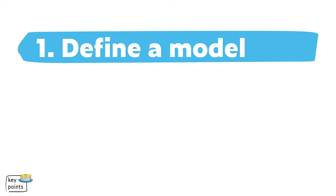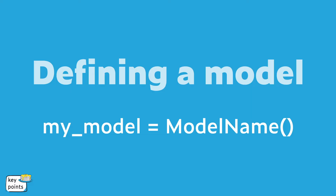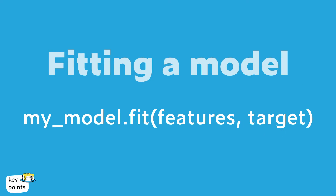When we define a model, what you want to do is think to yourself: what model would I like to use? As you develop your machine learning skills, you'll have a wide array of models to choose from and you'll start to develop a sense as to which models will be best suited for any given task. If we want to think about this in more general terms, we could abstractly represent a model using code that says my_model equals model_name. Pretty straightforward.